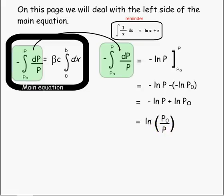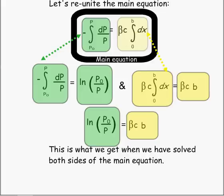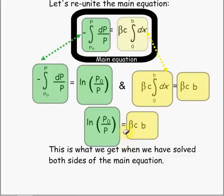Putting these back together, we reunite what we've done for both the right and left sides of our equations, and end up with: the negative natural log of P-naught over P is equal to the constant of proportionality times the concentration times the path length.